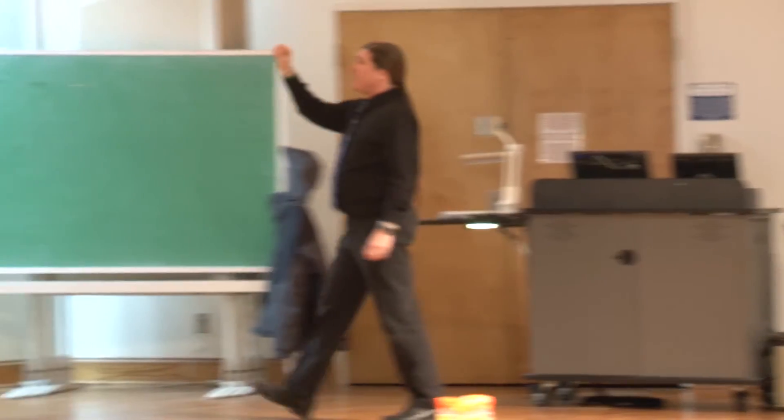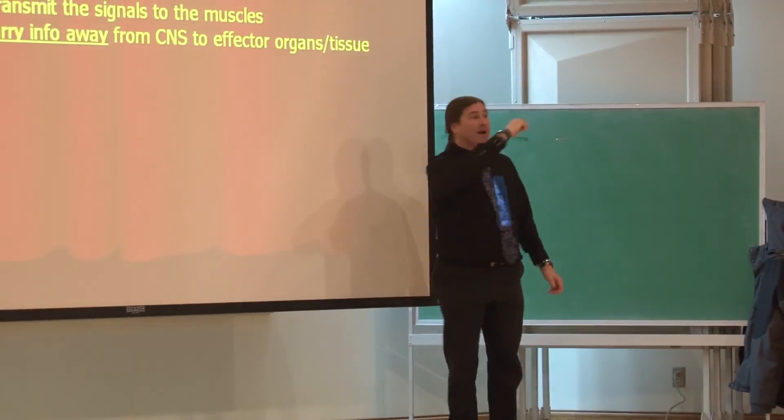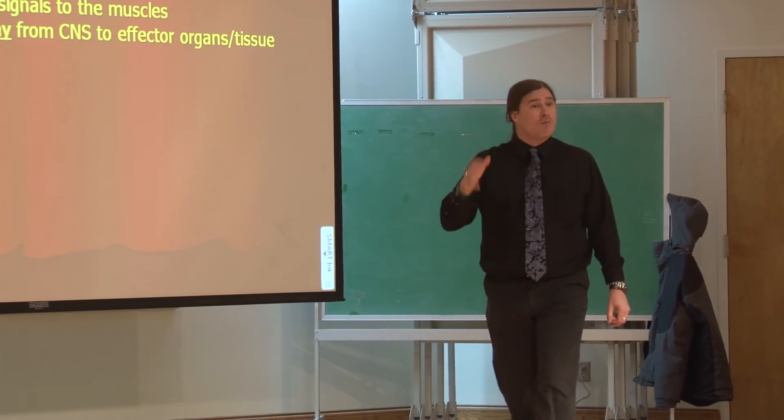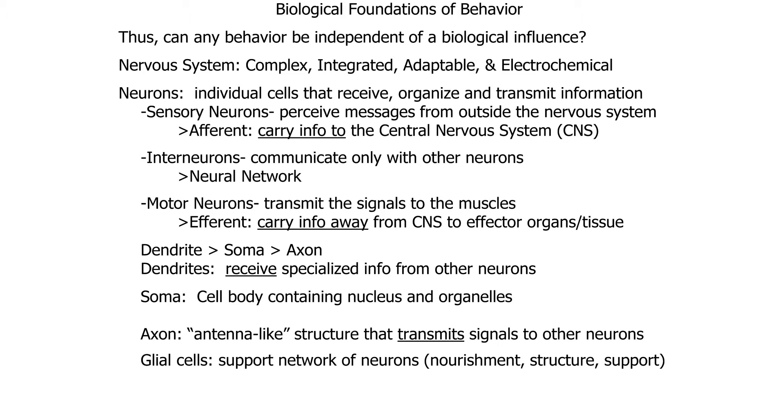All of it going on simultaneously through this complex integrated network of activity. So now I've got neurons that are carrying signals out of the CNS, out of the central nervous system. Those are what we're going to call efferent neurons.